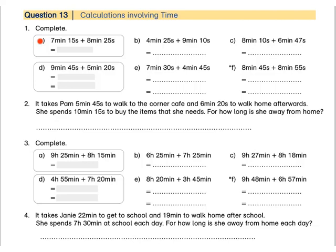Let's look at A. We have 7 minutes and 15 seconds and we must add 8 minutes and 25 seconds to it. When we add, we can only add things with the same units. That means we can add our minutes together. So we've got 7 minutes plus 8 minutes, which gives us a total of 15 minutes.